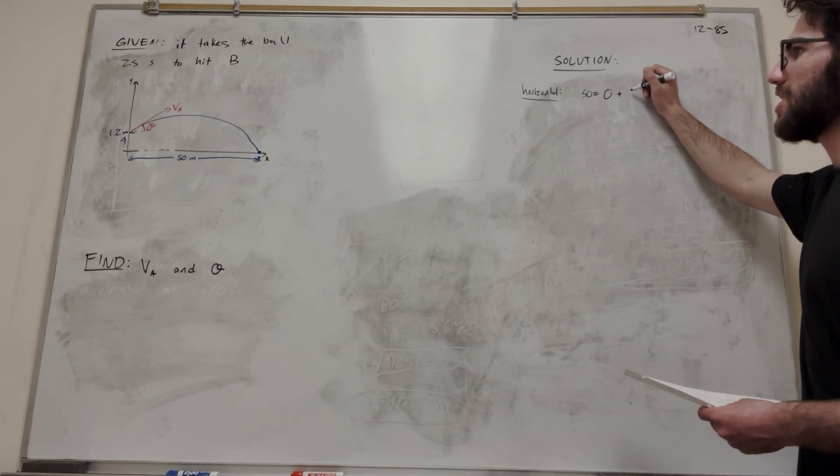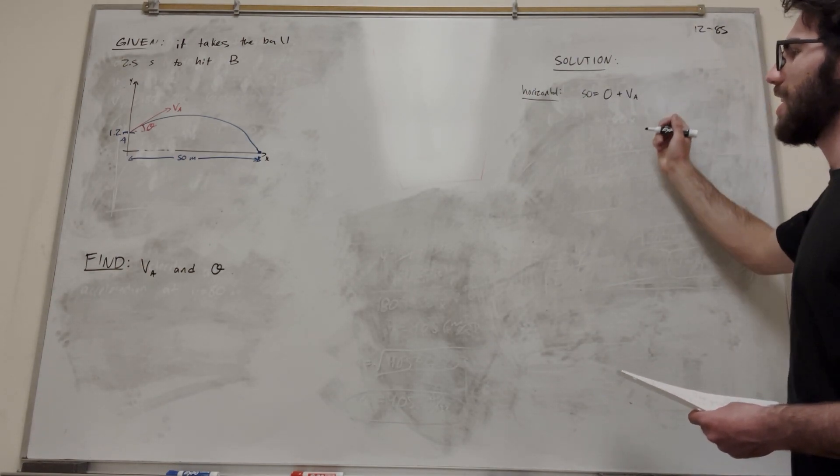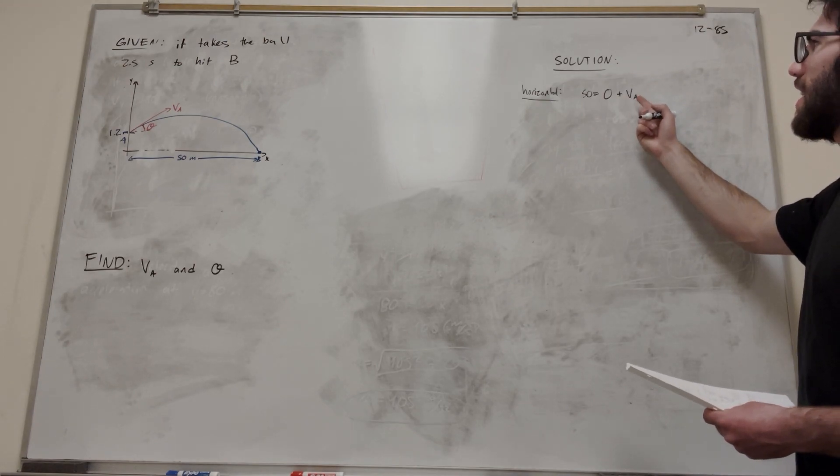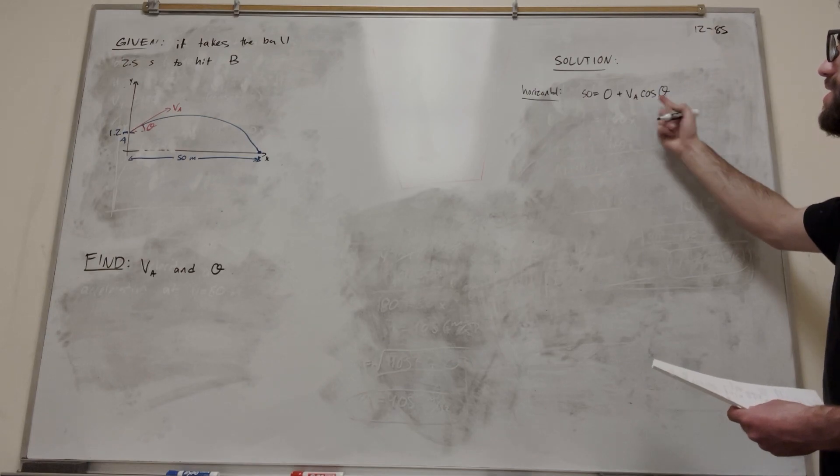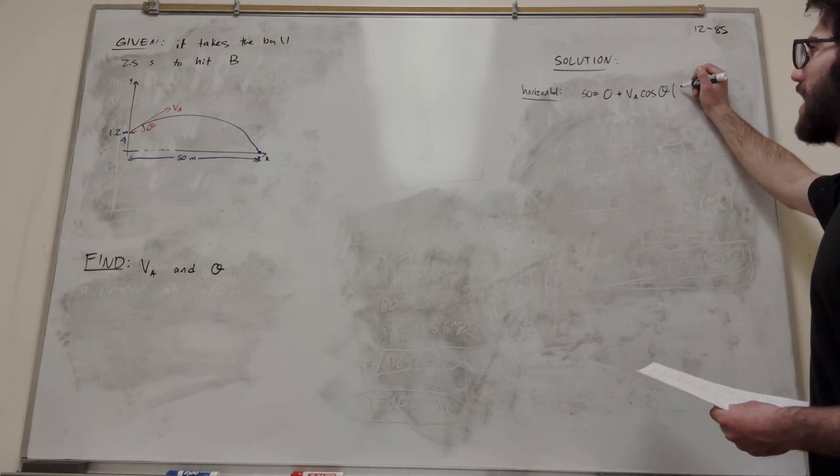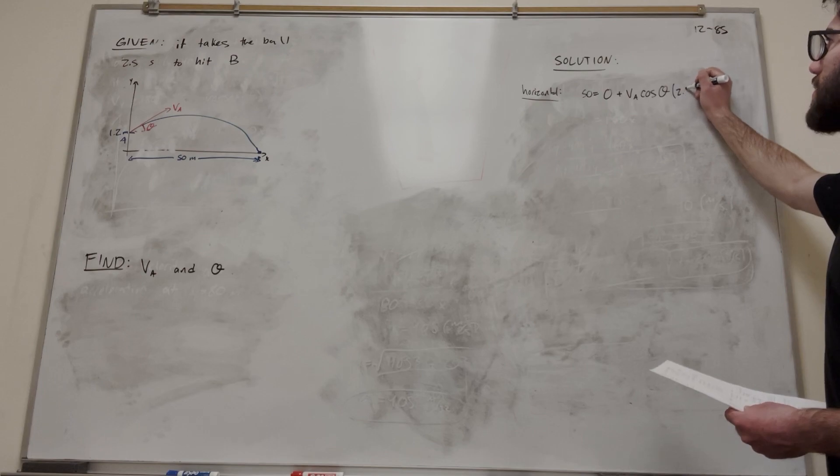Plus velocity in the x-direction. So we're going to find velocity in the x-direction. We take our velocity, and then we multiply it by cosine of theta. So these are our two unknowns, right? VA and the cosine of theta. And then we have to multiply that by time. So we know time is 2.5 seconds.